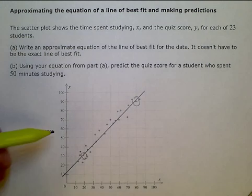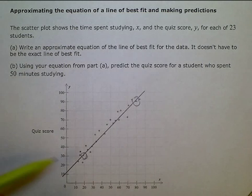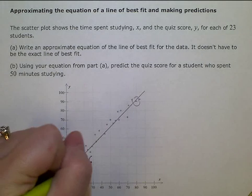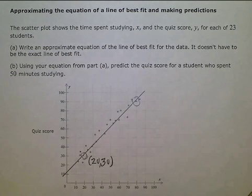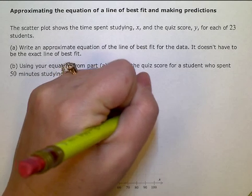You can see my y-intercept isn't an exact coordinate there. I can try to estimate it, but I want to be as exact as I possibly can. So the coordinates for the two points I picked are 20 over, 30 up, and then 80 over, 90 up.